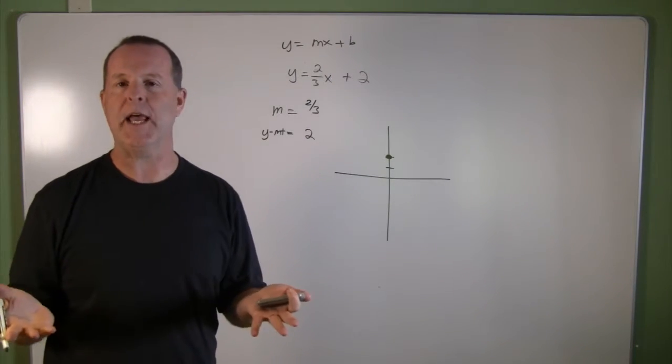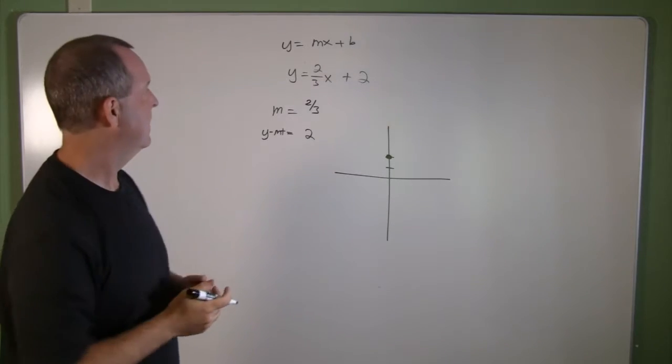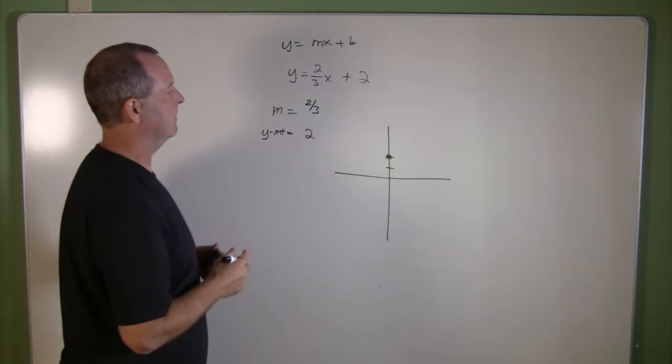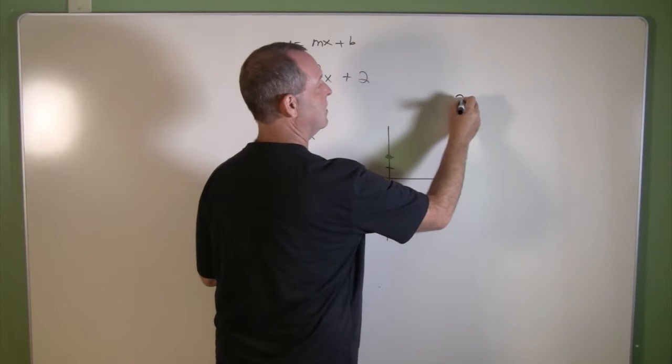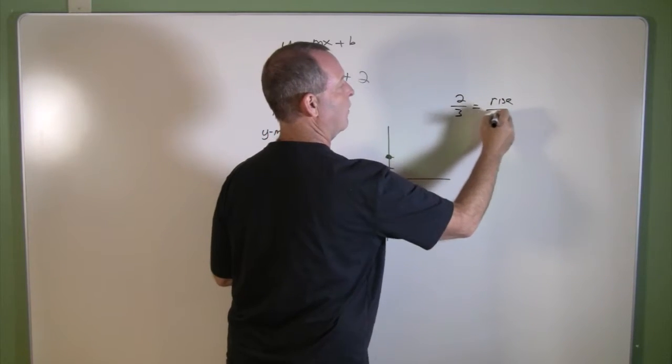From there, I can look at its slope to give me direction of where the next point is at. I have a slope of two over three. Remember that two over three equals its rise over its run.